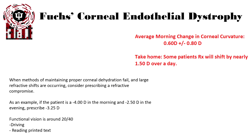When methods of maintaining proper corneal hydration fail, you'll see large refractive shifts occurring, and you need to consider prescribing a refractive compromise. For example, if a patient is a four-diopter myope in the morning and a two-and-a-half diopter myope in the evening, you might prescribe in between at three-and-a-quarter diopters. This puts the person about three-quarters of a diopter off at worst at any point of the day, leaving them with functional vision of approximately 20/40 — sufficient for driving and reading most normal printed text. At times you must accept a refractive prescribing compromise that maximizes functionality even though you can't make vision perfect at any one time of day.